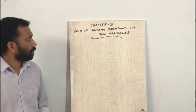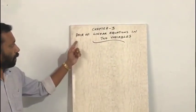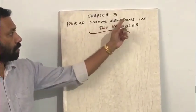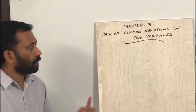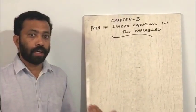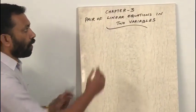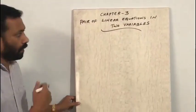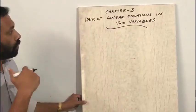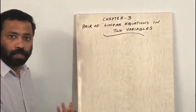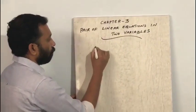Good morning students. Today we are going to start our new chapter, that is Chapter 3: Pair of Linear Equations in Two Variables. Before moving to this chapter, let us recall some terms or facts. First, what is an equation? What is the meaning of a linear equation? What is the meaning of a linear equation in two variables? And what is the nature of the solution?